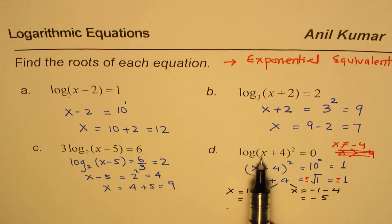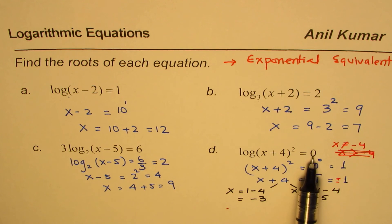You can substitute these values here and check. For each, what do you get? If I substitute minus 3 here, minus 3 plus 4 is 1. So 1 square is 1. Log of 1 is 0.